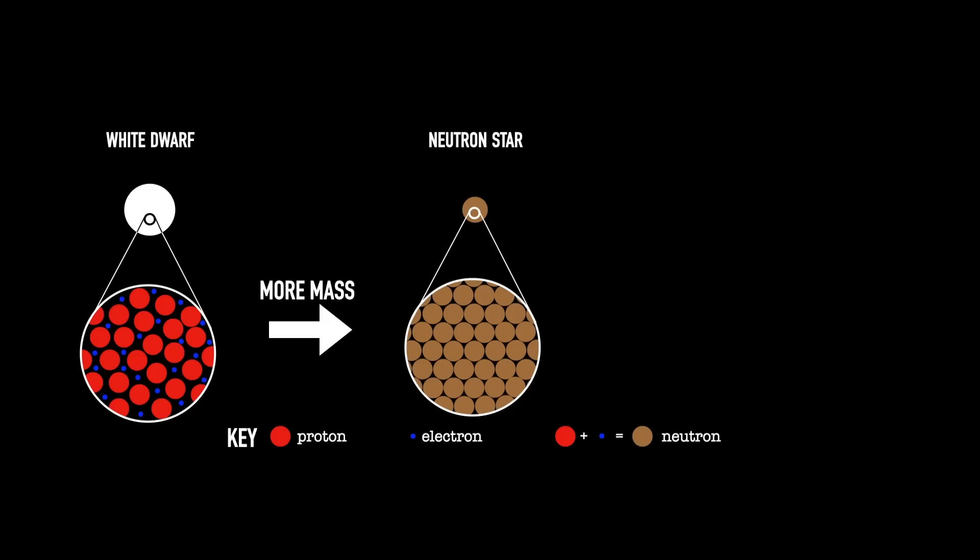When you reach the limit for what neutrons can't resist anymore, then gravity wins. The whole star starts to collapse down, and gravity becomes strong enough that light can't escape. So you get this event horizon where you no longer get any light from. It's this 3D sphere around what once was a star where there's no longer any light or information.